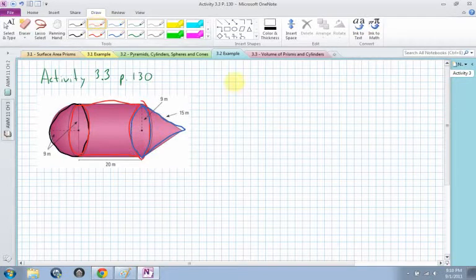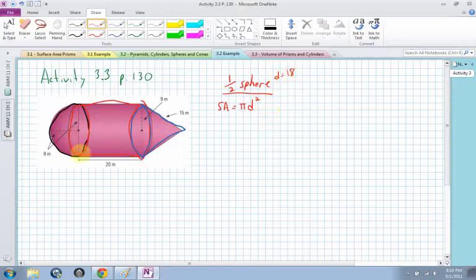So for the first one, let's look at the half sphere. The surface area for a sphere is equal to pi times the diameter squared. In this case, it gives us 9, which is the radius. So that means the diameter is actually equal to 18. Diameter is equal to twice the radius. And we need the diameter squared. So 18 squared is equal to 324.